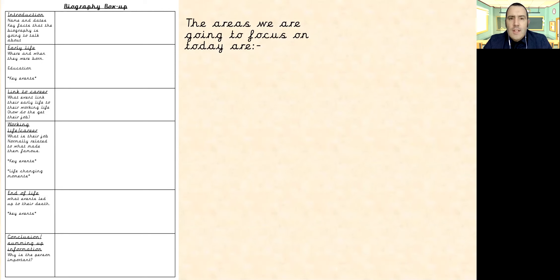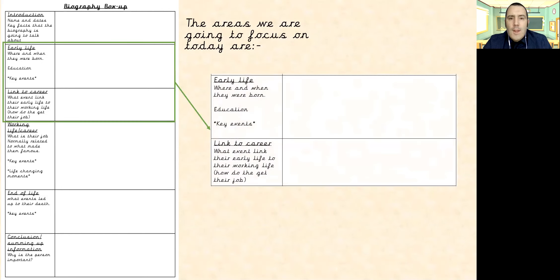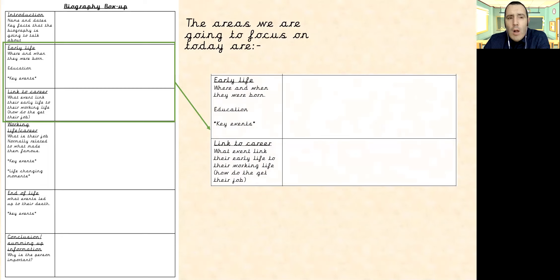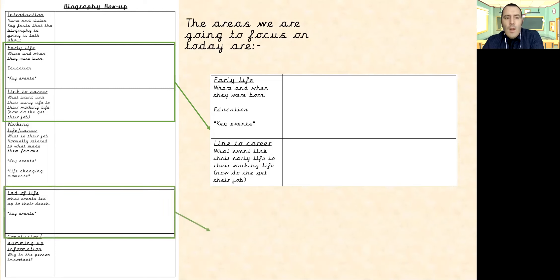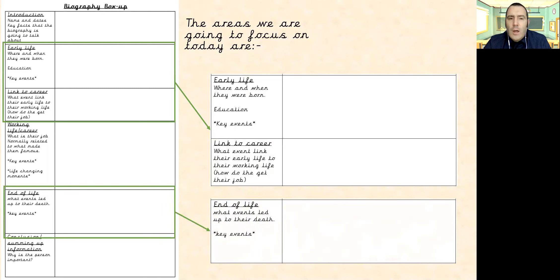The areas we're going to focus on today are: their early life — so Kit Marlowe, Christopher Marlowe's early life. Where was he born? When was he born? Where did he go to school? What key events took place? The link to his career — so what event links his early life with his career, how did he get his job? And the end of his life as well — the events that led up to his death, and any key events that happened around it.